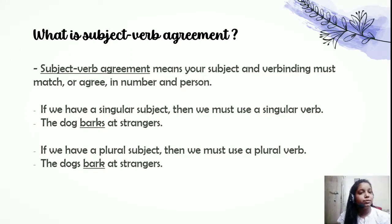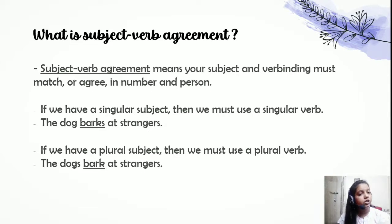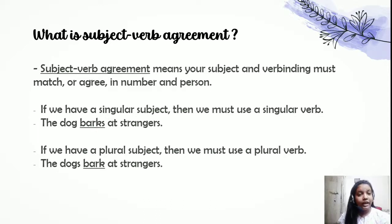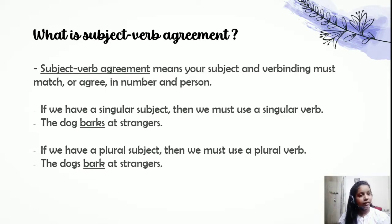For example, 'the dog barks at strangers' — here 'dog' is a singular subject so we use 'barks,' which is a singular verb. But when we say 'the dogs bark at strangers,' 'dogs' becomes plural and 'barks' changes to 'bark,' which is the plural form. This is the first rule of subject-verb agreement. In total we have nine rules, so let's begin with the second one.